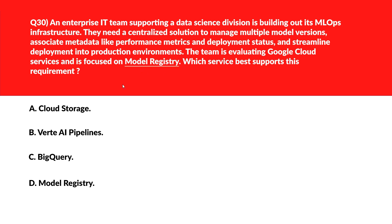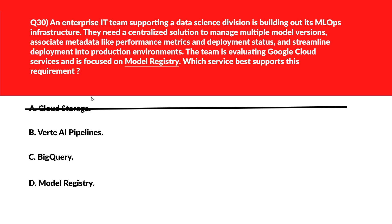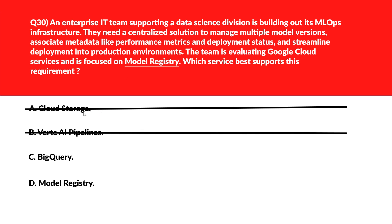This question is about the model registry. Option A says Cloud Storage — it's a scalable object storage system for datasets, model artifacts, and logs, but that's not what we need here. Option A is out. Option B says Vertex AI Pipelines — this works as a workflow automation tool for managing end-to-end machine learning processes, which is also not what we're looking for. Option B is wrong.